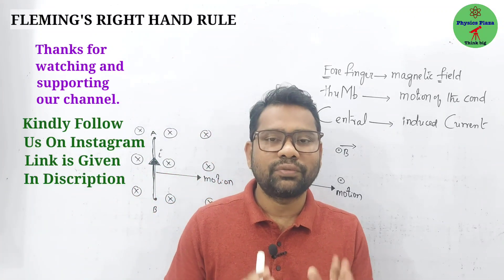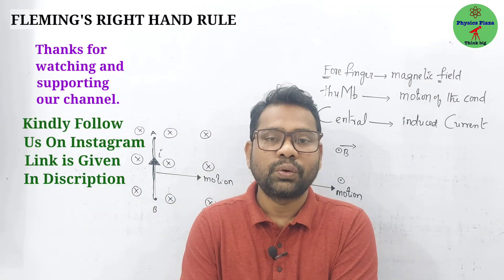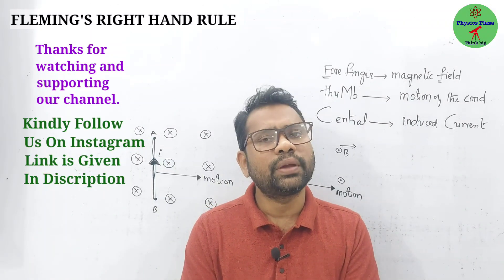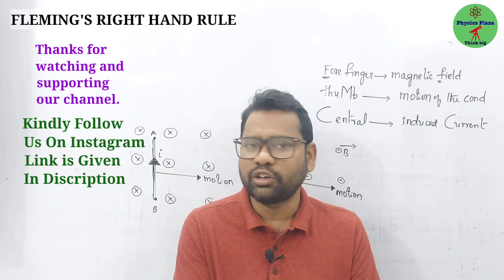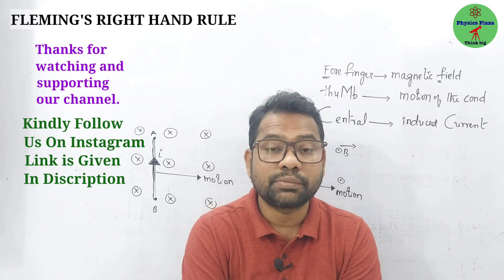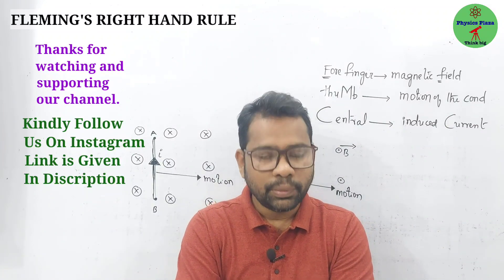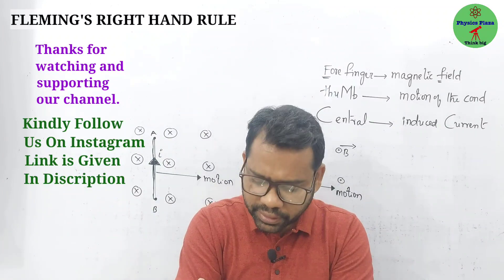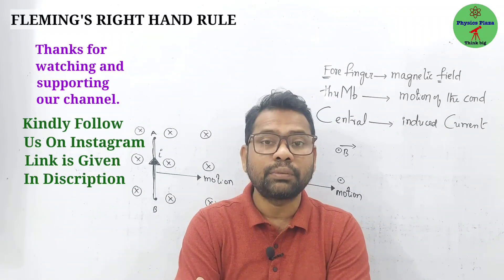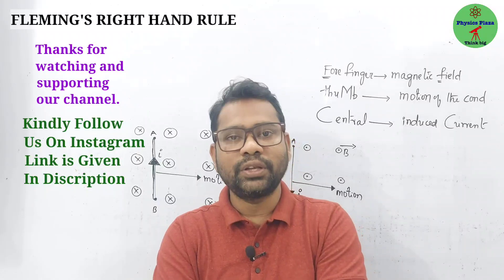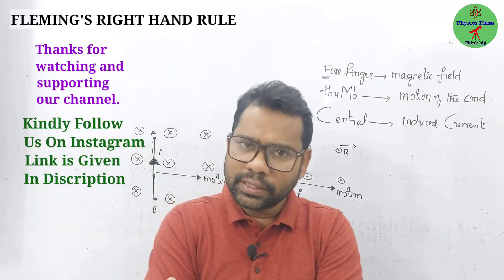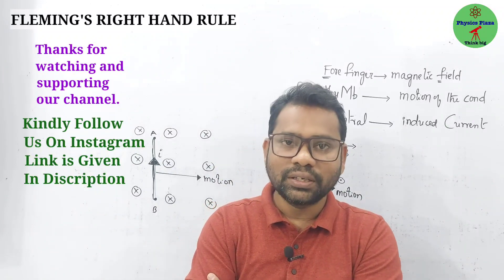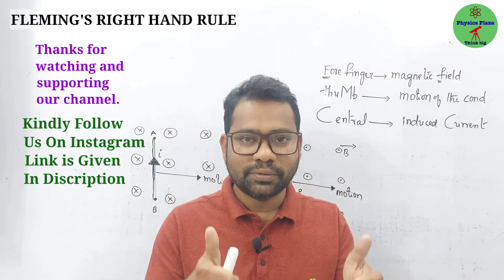So to summarize today's session: we have two rules — Lenz's rule, which states that the direction of induced current is such that it opposes the cause which produced it, and Fleming's right-hand rule, where four fingers give the magnetic field direction, thumb gives the motion direction, and the central finger gives the direction of induced current. Links related to electromagnetism will be given in the description. The next class will cover generators and transformers. Thank you and all the best!